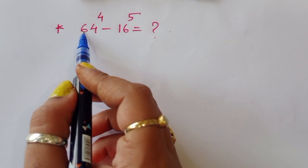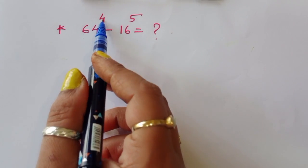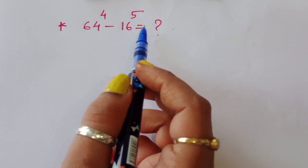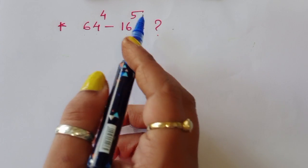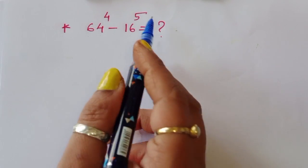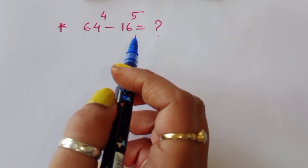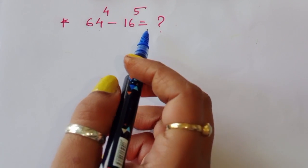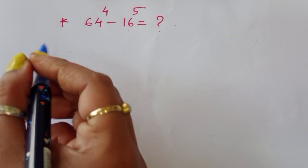The question is: 64 power 4 minus 16 power 5 is equal to what? We have to find out the value of this term. Let's see the solution.